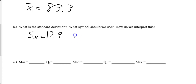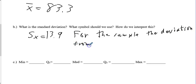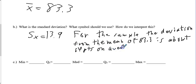What does that mean? What it means is for the sample, the deviation from the mean of 83.3 is about 14 points on average. More specifically, 13.9. But, if we're just looking at a class score, the deviation from the mean is about 14 points. Now, the min, Q1, median, Q3, and max. That's the five-number summary. Not five-finger death punch. Five-number summary.